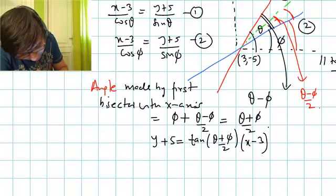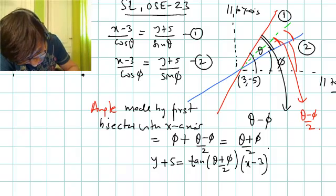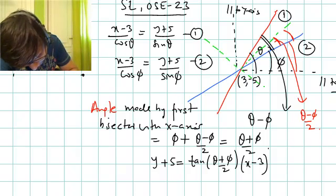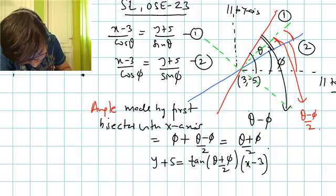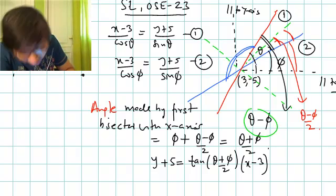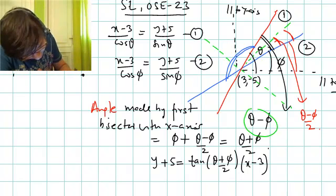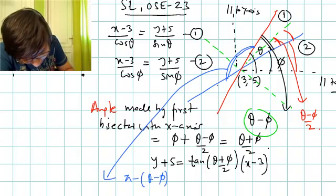You can change the form and write it in terms of sine and cosine. Now let's find the other bisector. The other angle between the two lines is pi minus (theta minus phi). If this first inter-angle is theta minus phi, the supplementary angle is pi minus (theta minus phi).